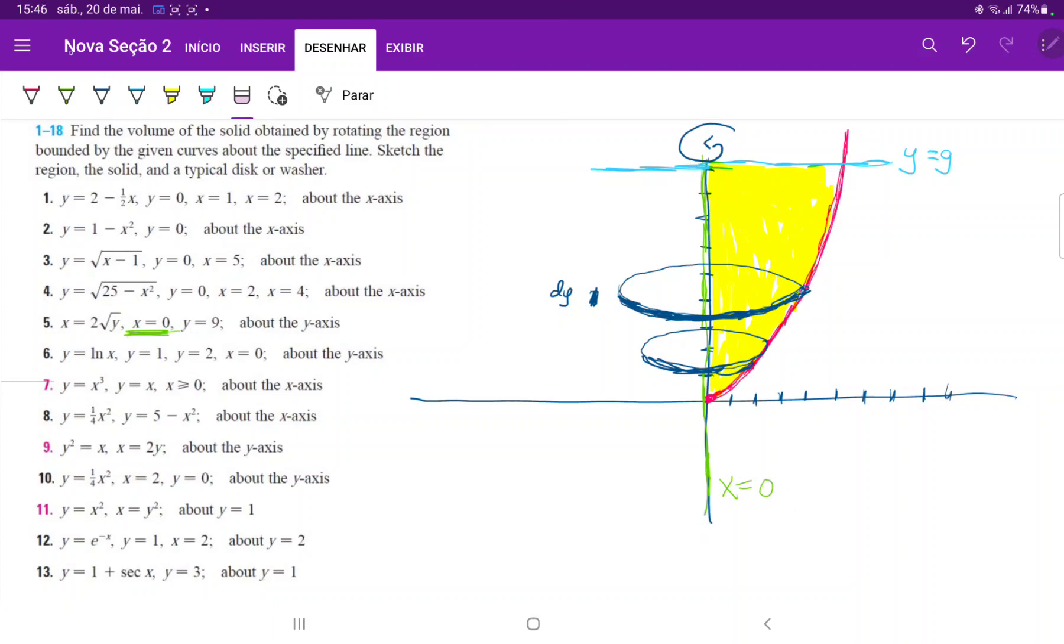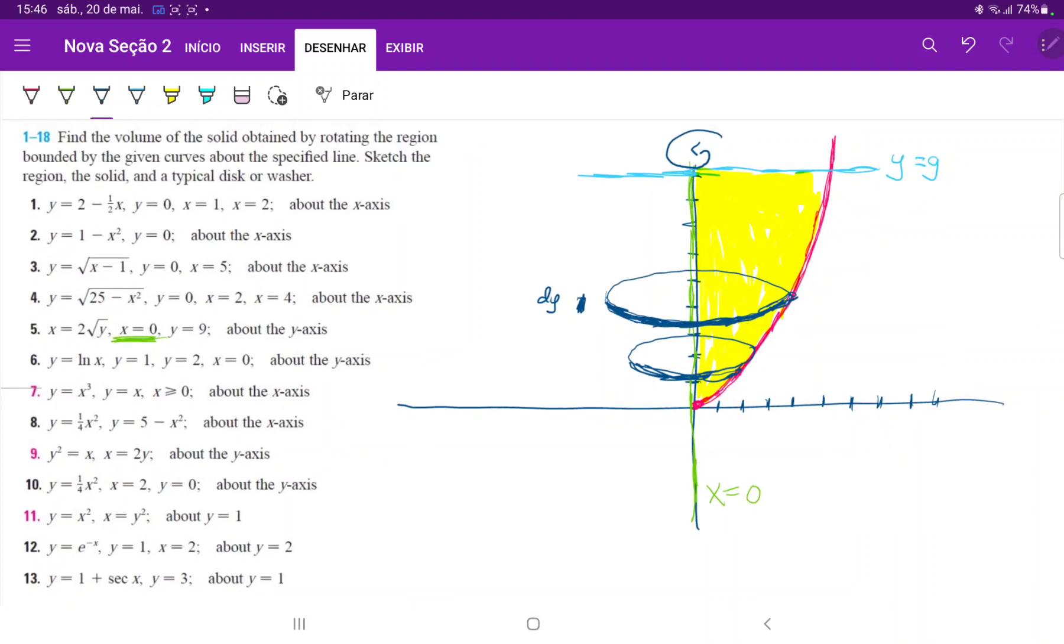So we sum up from here all the way up to 9, we're going to have a volume. So let's set this up. Our integral goes from 0. And because we're integrating with respect to y, right? We're multiplying all of these by the thickness by a little dy. So we're going from 0 to 9.